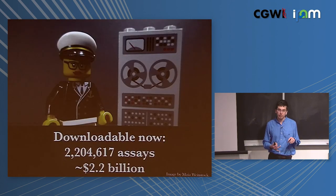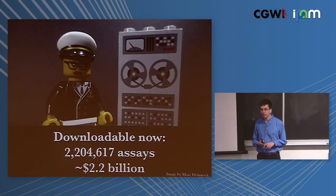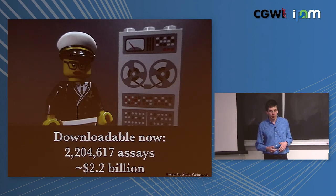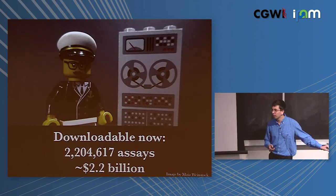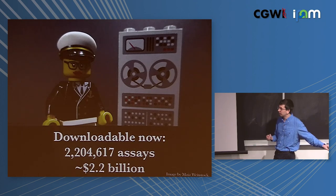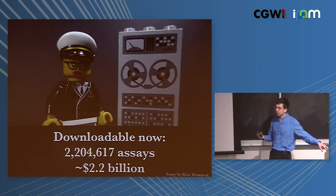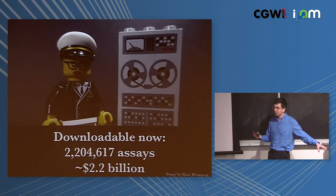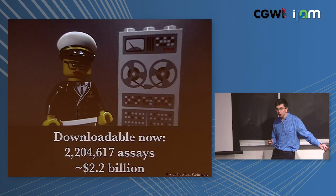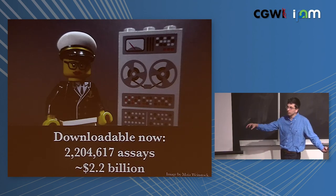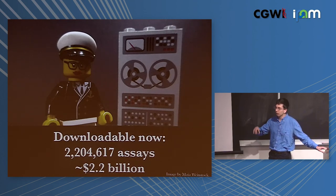If you just look at what's on Array Express, Geo, SRA, and ENA, you've got about 2.2 million samples to work with that are essentially genome-wide measurements of how biological systems are working. Alexis Battle mentioned that adding recount really helped performance for some of their methods, even though the data aren't ideally suited to exactly the experimental design they were setting out to do. These data that aren't designed for your purposes can easily be reused for them.